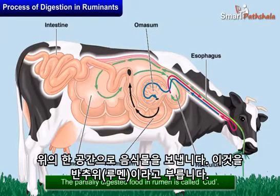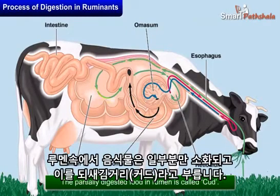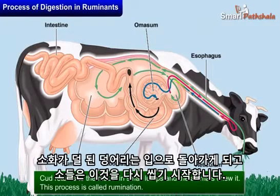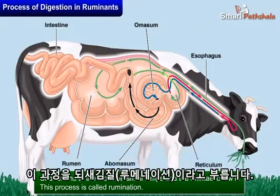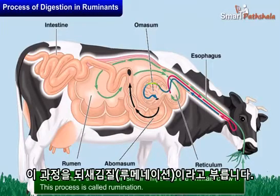In the rumen the food gets partially digested and is called cud. Later the cud returns to the mouth in small lumps and the animals chew it. This process is called rumination and these animals are called ruminants.